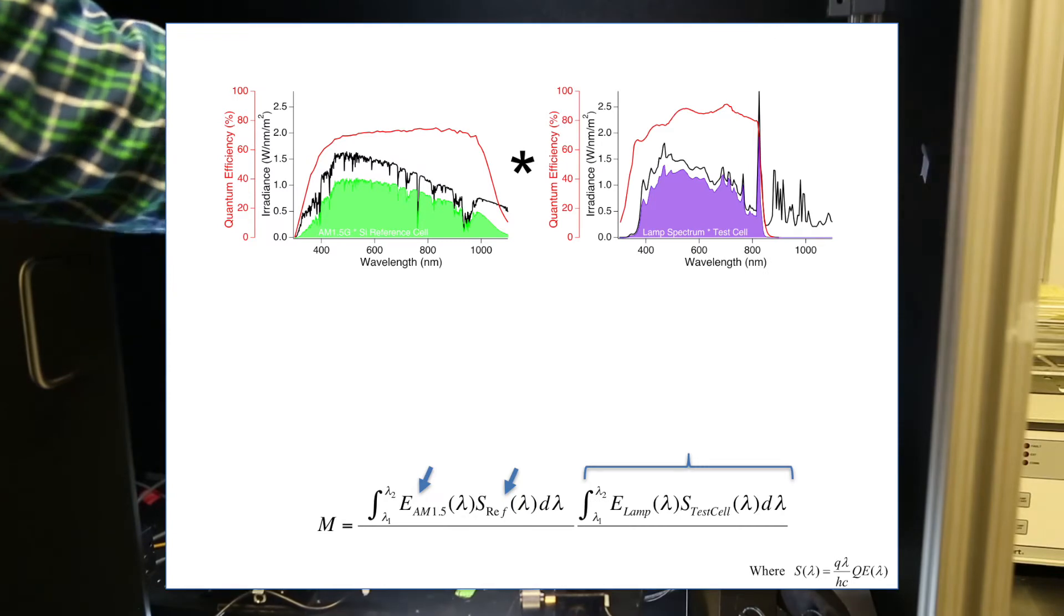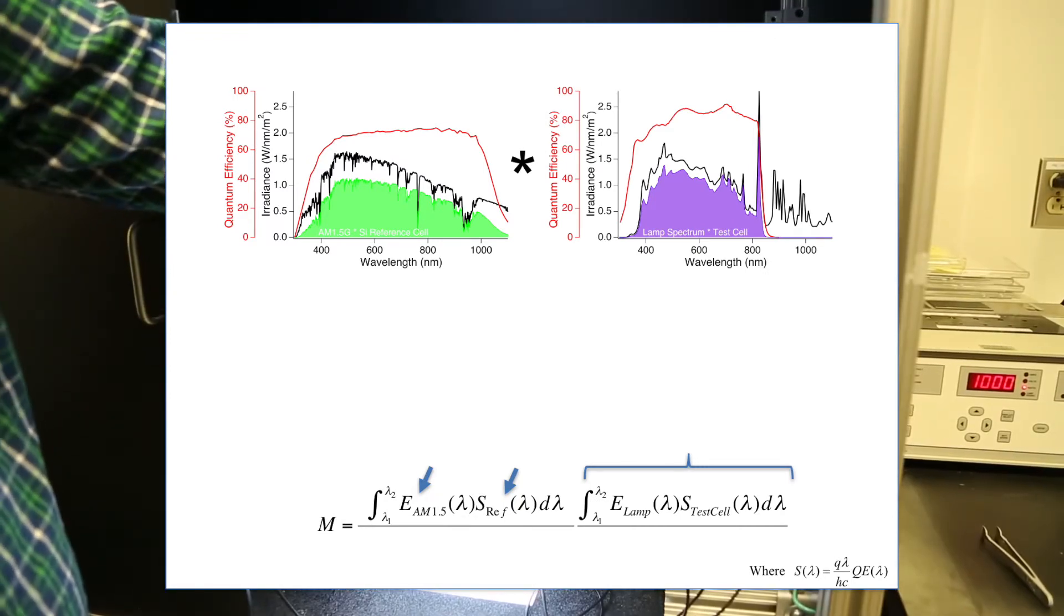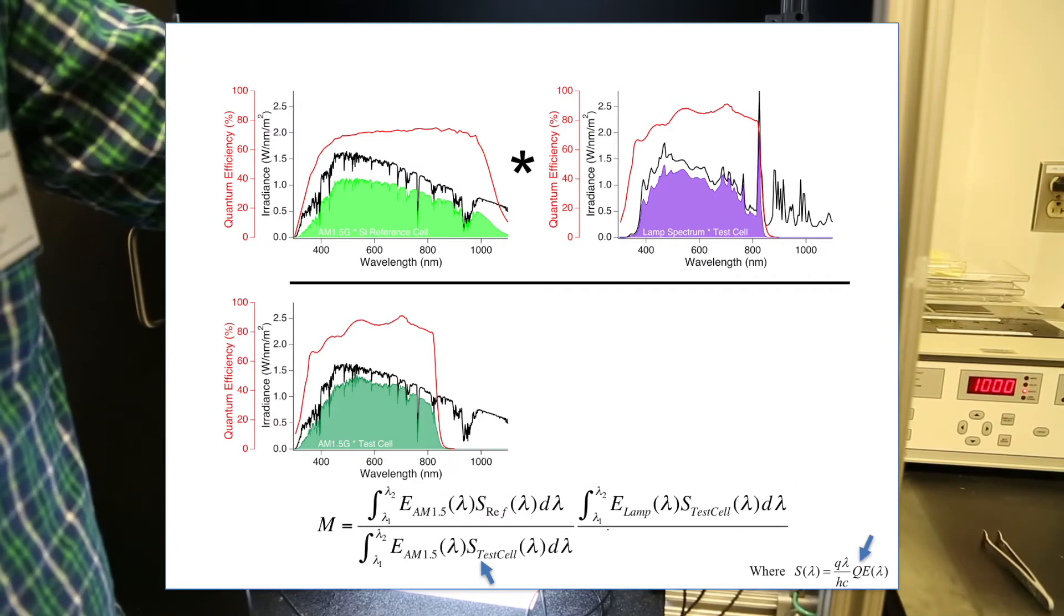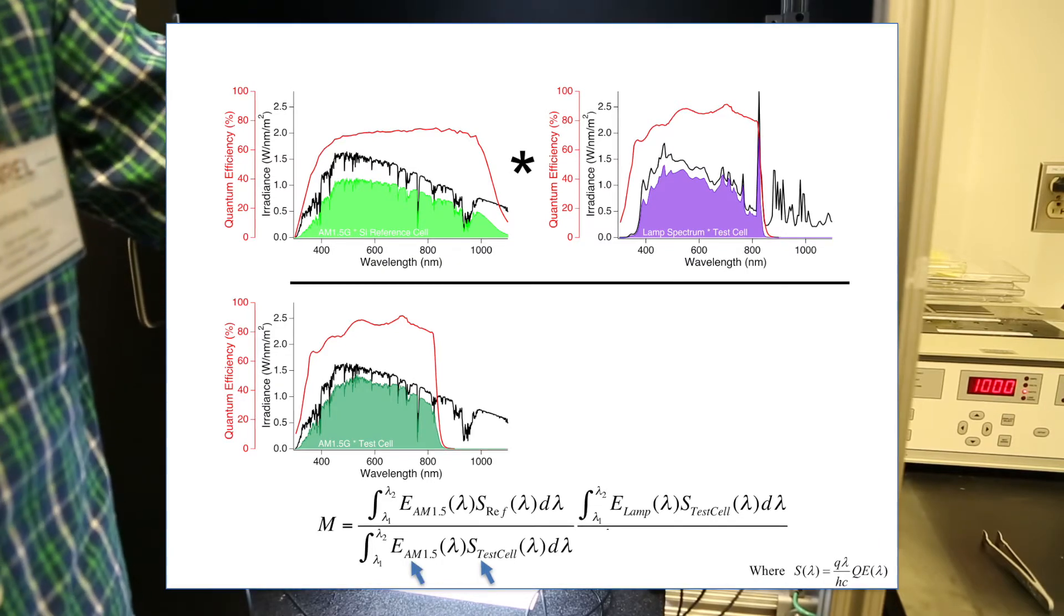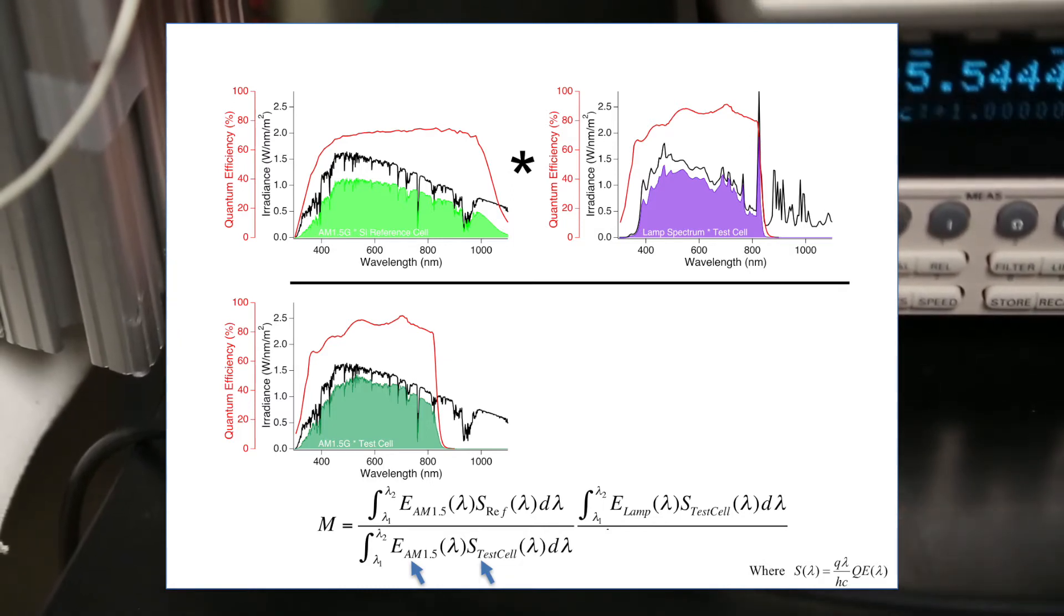Second, we measure the short circuit current of the test cell under the lamp spectrum. This factor is multiplied with the first short circuit current to calculate M. Third, we measure the EQE of the test cell and multiply the AM 1.5G solar spectrum to calculate its short circuit current. This goes into the denominator of M.